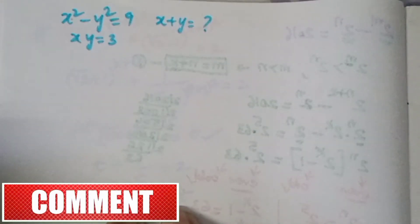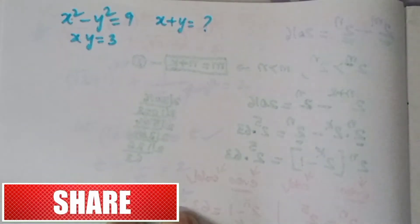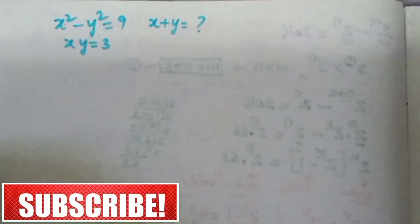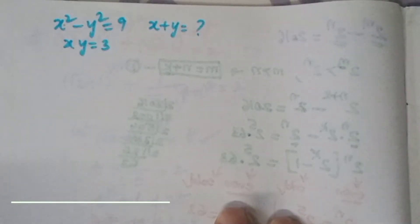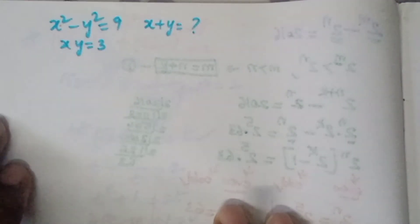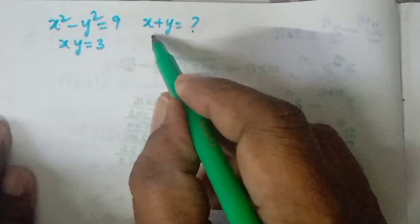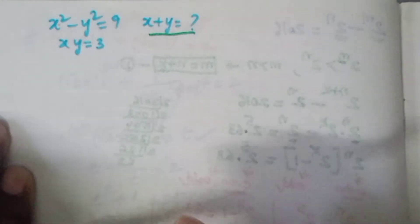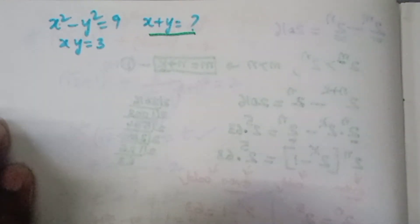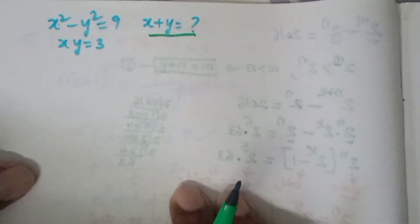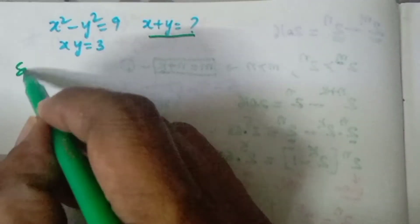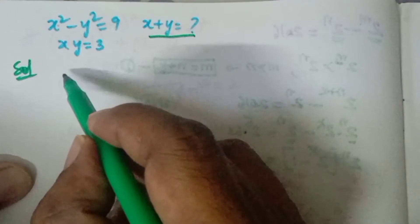Good morning children, welcome to NCG Maxima. Here we are having an all-impaired question: x squared minus y squared is equal to 9, and xy is equal to 3. What we are asked to find is the value of x plus y. This problem is a very important model of all-impaired problems, and there are many methods, but we will take the easiest method.